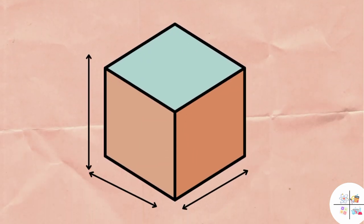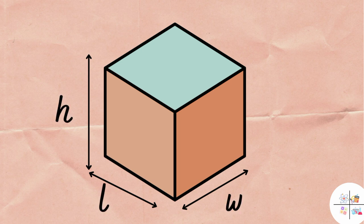For a cube or cuboid, measure the length, width, and height of the object and multiply the measurements together using this formula.